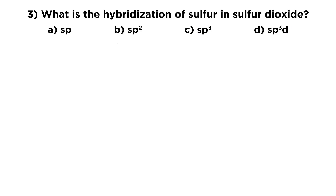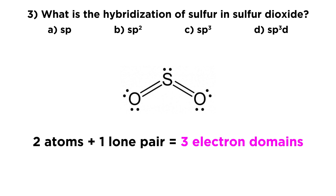For the third question, we're looking at sulfur dioxide and want to know the hybridization of sulfur. Looking at the Lewis dot structure: sulfur has six valence electrons, so it makes two double bonds — one to each oxygen — and has a lone pair left over. Counting up the electron domains: two oxygen atoms plus one lone pair gives three electron domains total. With three electron domains, sulfur is sp2 hybridized.